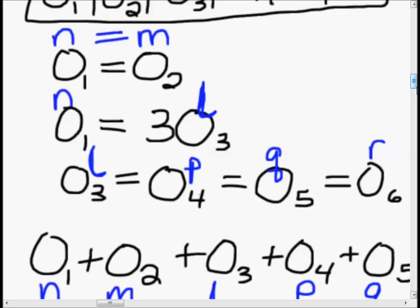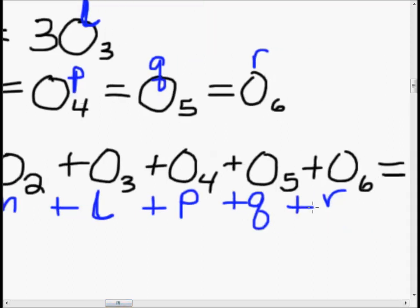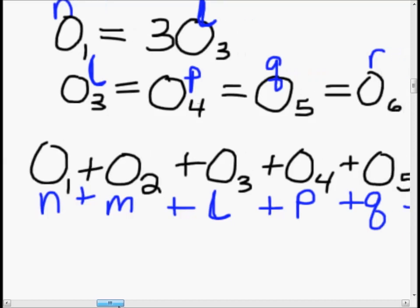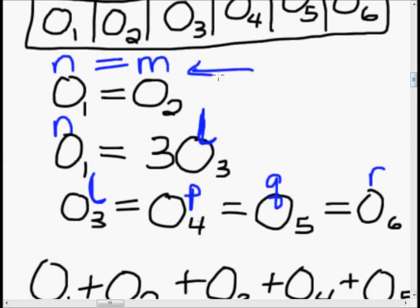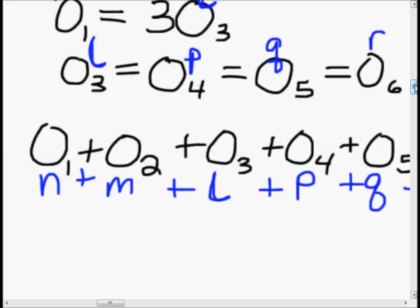Since N equals M, we can substitute. Coming back to our sum equation — N plus M plus L plus P plus Q plus R equals 1 — we can replace M with N, because M equals N. That means we get N plus N instead of N plus M. Your goal here is always to reduce the number of variables, which makes the problem much, much easier.